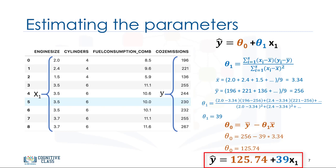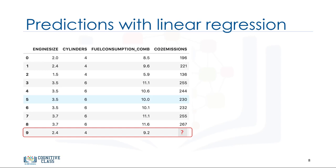Now, we can write down the polynomial of the line. So, we know how to find the best fit for our data and its equation. Now, the question is, how can we use it to predict the emission of a new car based on its engine size? After we found the parameters of the linear equation, making predictions is as simple as solving the equation for a specific set of inputs. Imagine we are predicting CO2 emission, or y, from engine size, or x, for the automobile in record number 9. Our linear regression model representation for this problem would be y hat equals theta0 plus theta1 x1. Or, if we map it to our data set, it would be CO2 emission equals theta0 plus theta1 engine size.